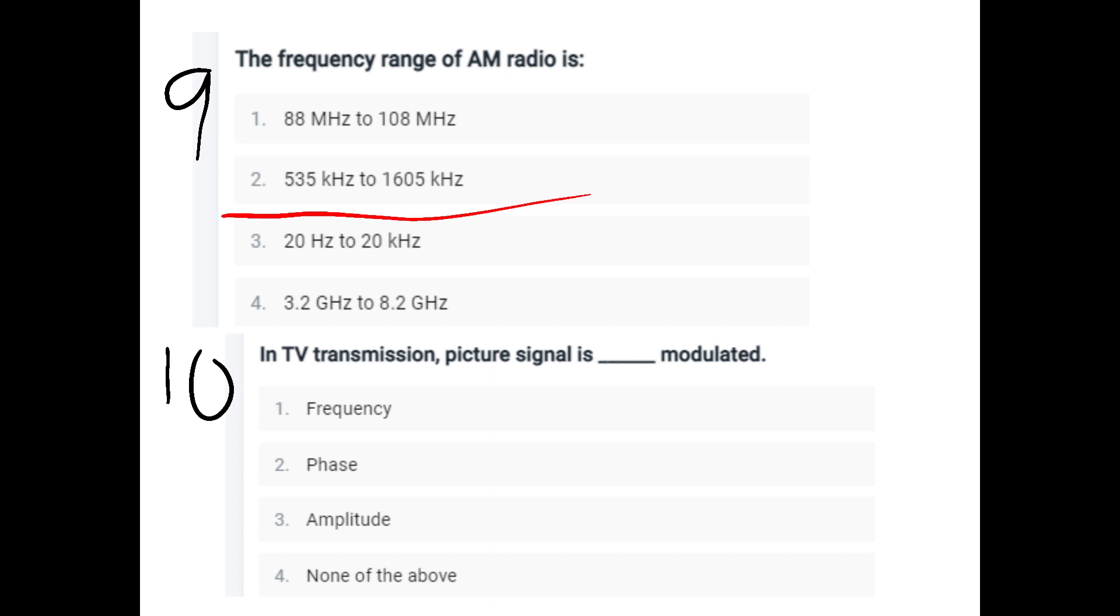Question nine: The picture signal is dash modulated. The picture signal is dash modulated. Frequency, phase, amplitude? It is amplitude. It is amplitude modulated. The picture signal is amplitude modulated.